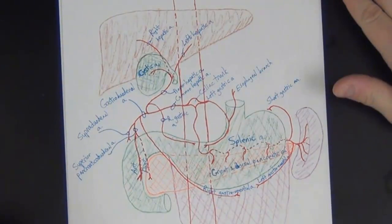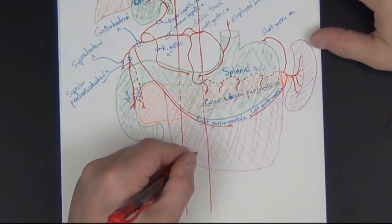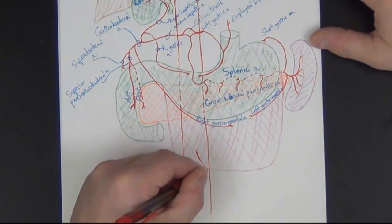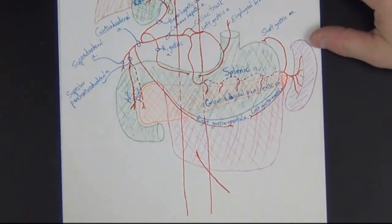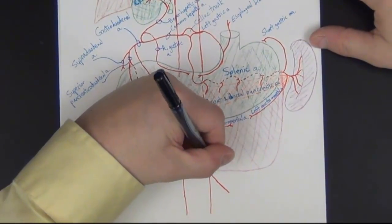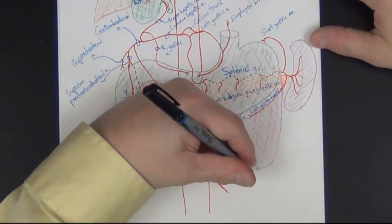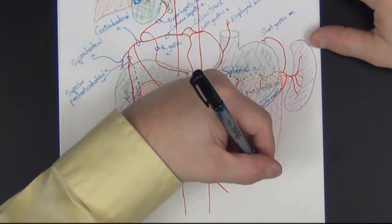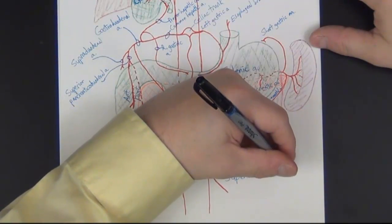We've now accounted for all branches of the celiac trunk. Moving to the next branch off the abdominal aorta — the superior mesenteric artery — which supplies the mid-gut structures: the distal duodenum, jejunum, ileum, cecum, appendix, ascending colon, and transverse colon. Single branches supply the GI tract; paired branches supply other organs we'll discuss shortly.